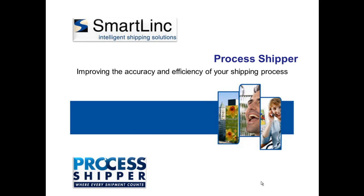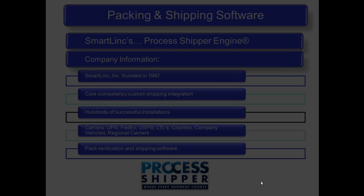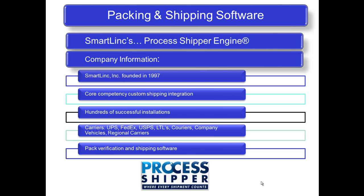Welcome to Shipping with Process Shipper, helping you improve the accuracy and efficiency of your shipping process. SmartLink is the company and is also the manufacturer of Process Shipper, which is the software system. SmartLink was founded in 1997, and since our inception, our core competency has always been custom shipping integration. We have hundreds of successful installations across the globe and work with all carriers from UPS to your own company vehicles.